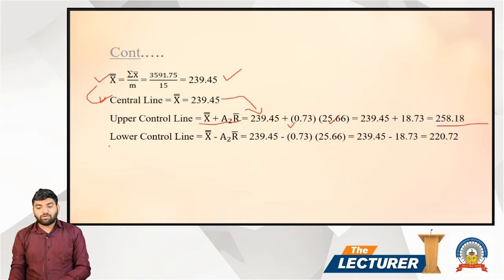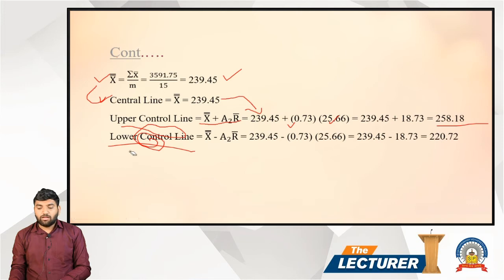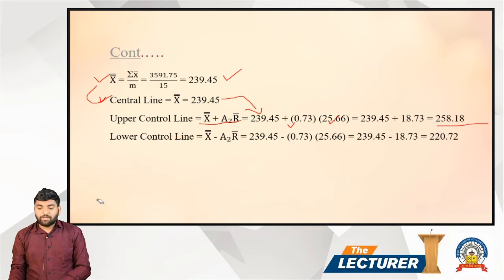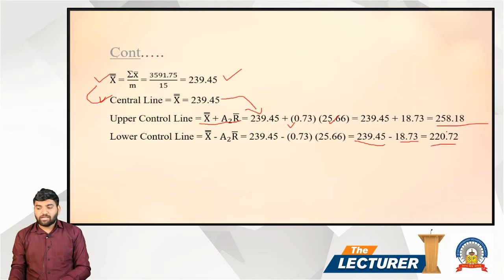For the Lower Control Limit, the formula is the same as UCL but with a minus sign: LCL = X double bar minus A2 times R-bar. So 239.45 minus 18.73 gives LCL = 220.72. To summarize: Central Line = 239.45, UCL = 258.80, LCL = 220.72.